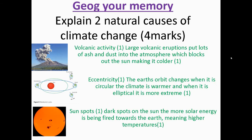Welcome back. The first image is volcanic activity — one mark for stating volcanic activity. The second mark is for explaining how that volcanic eruption leads to climate change. Large volcanic eruptions put lots of ash and dust into the atmosphere, which blocks out the sun, dropping temperatures and making it colder. They must explicitly refer to the climate in their answer to get that second mark: it makes it colder because it has blocked out the sun.